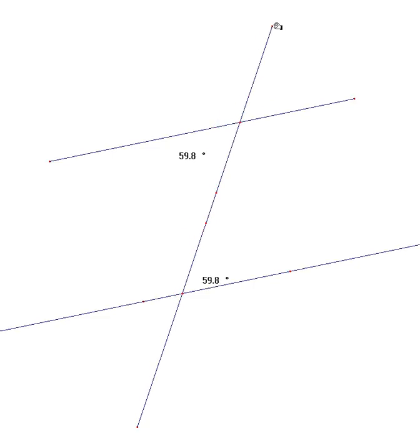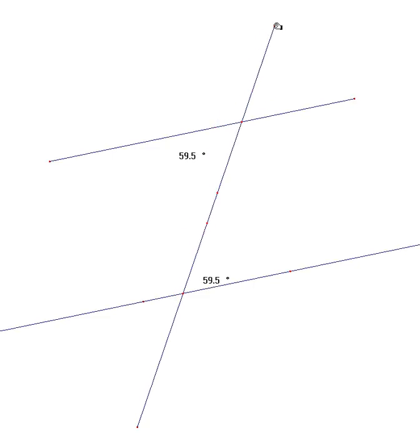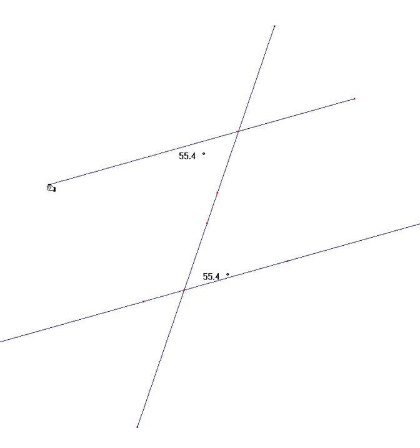You might be able to visualise the alternate angles forming a Z shape. Alternate angles are equal.